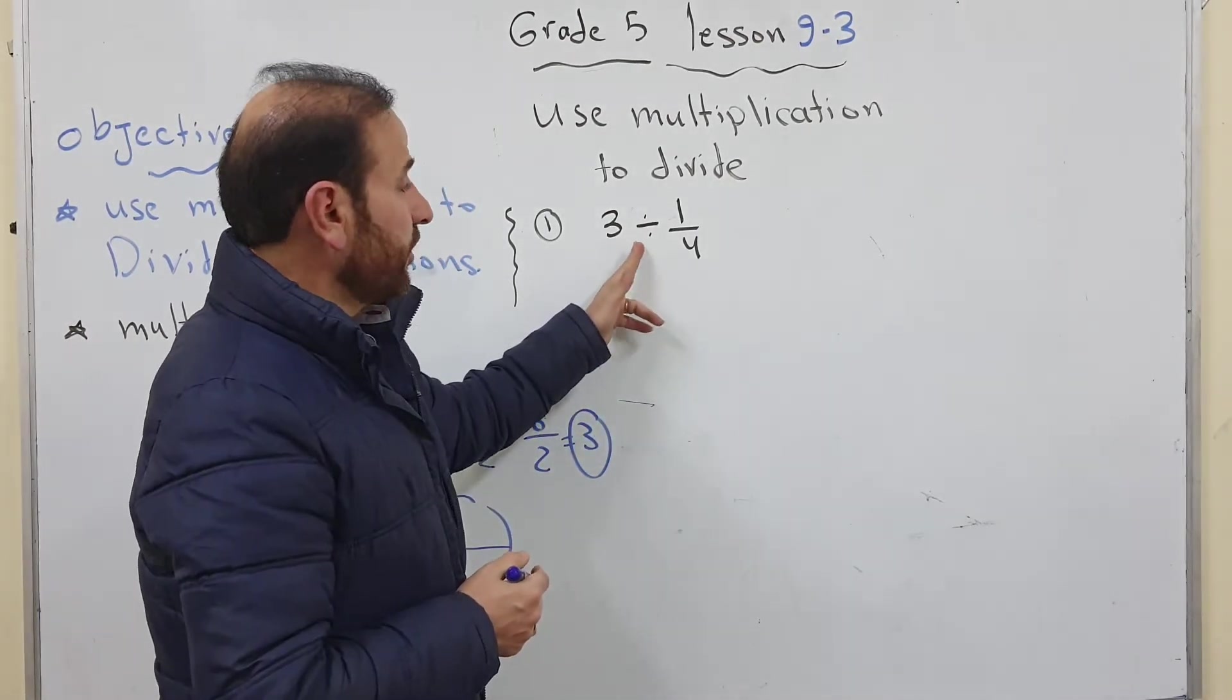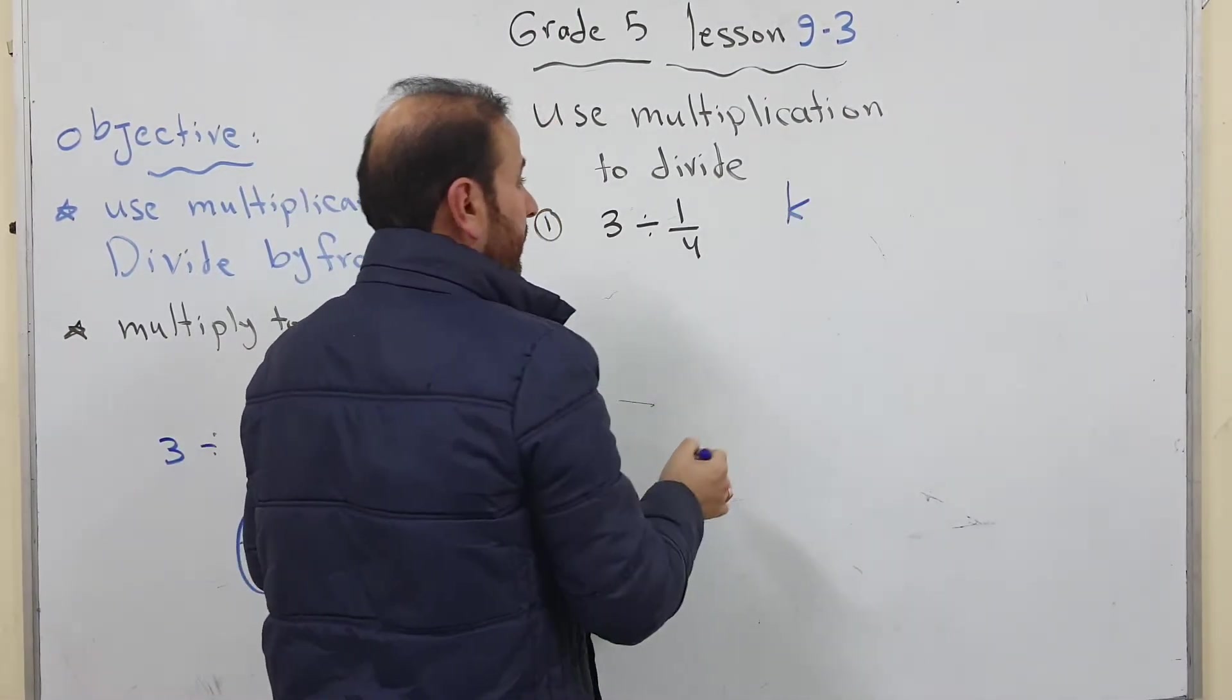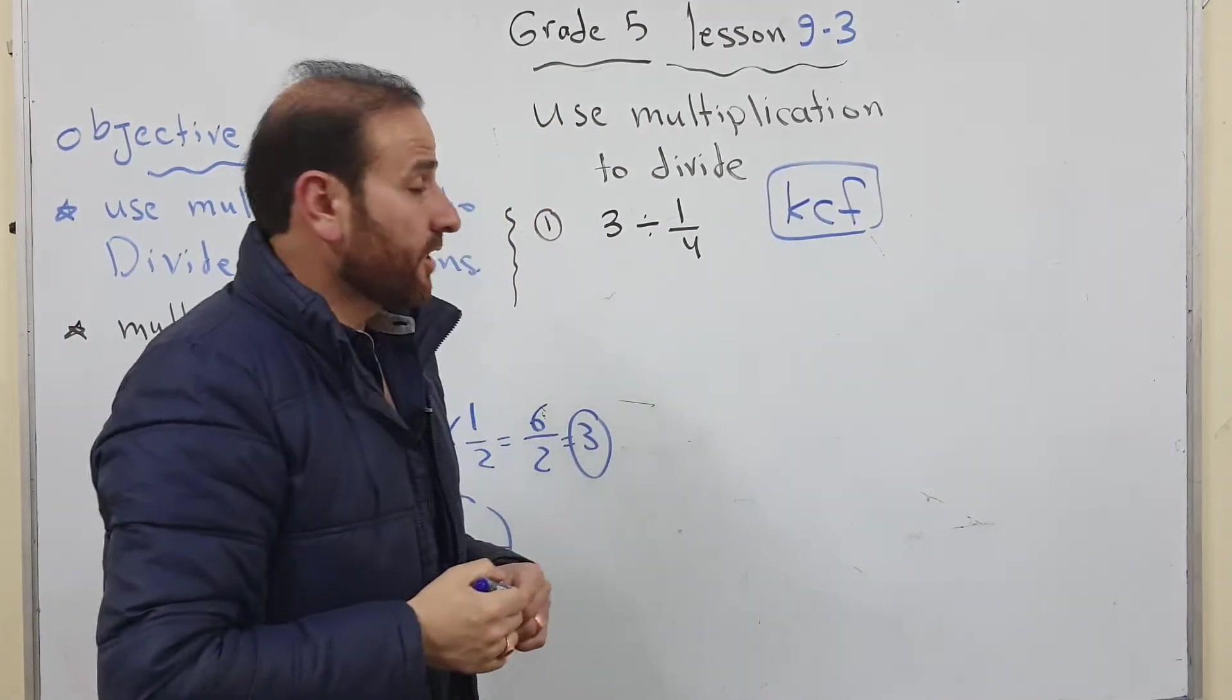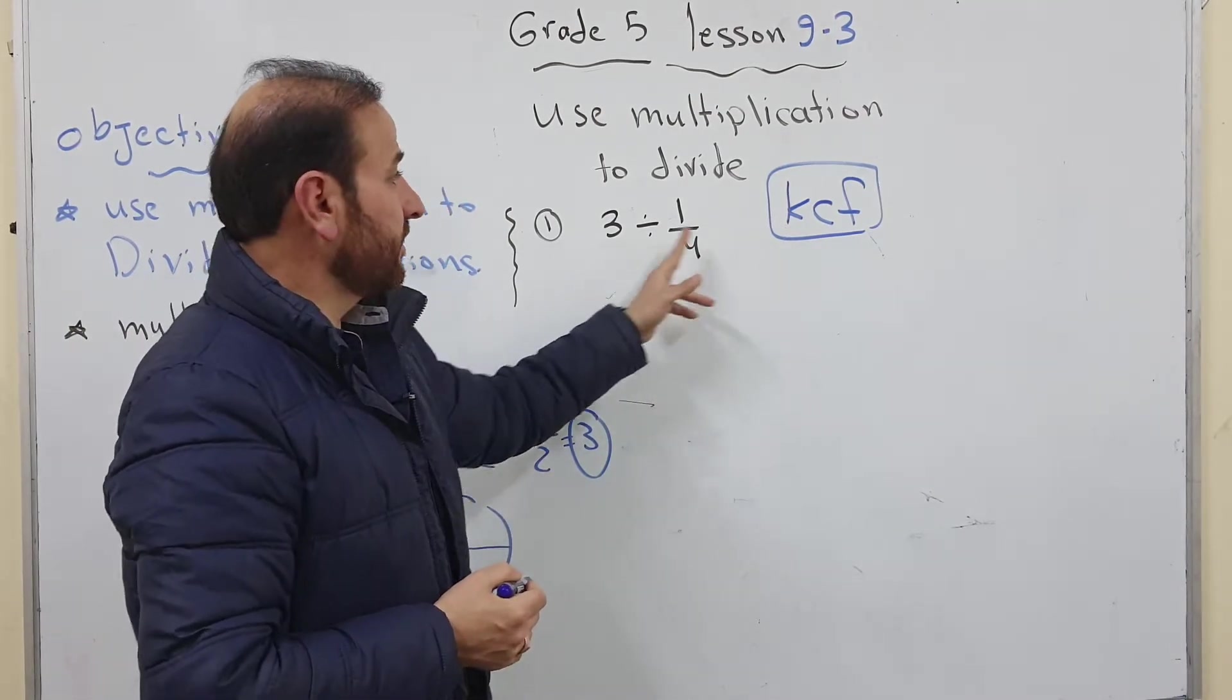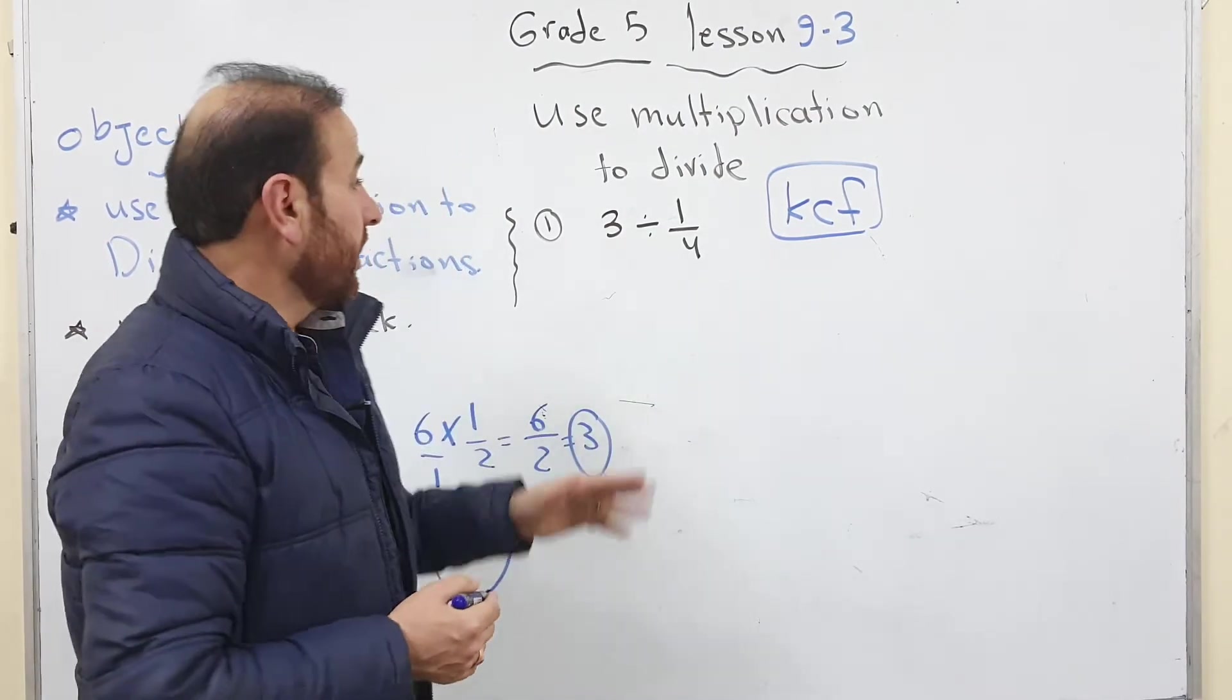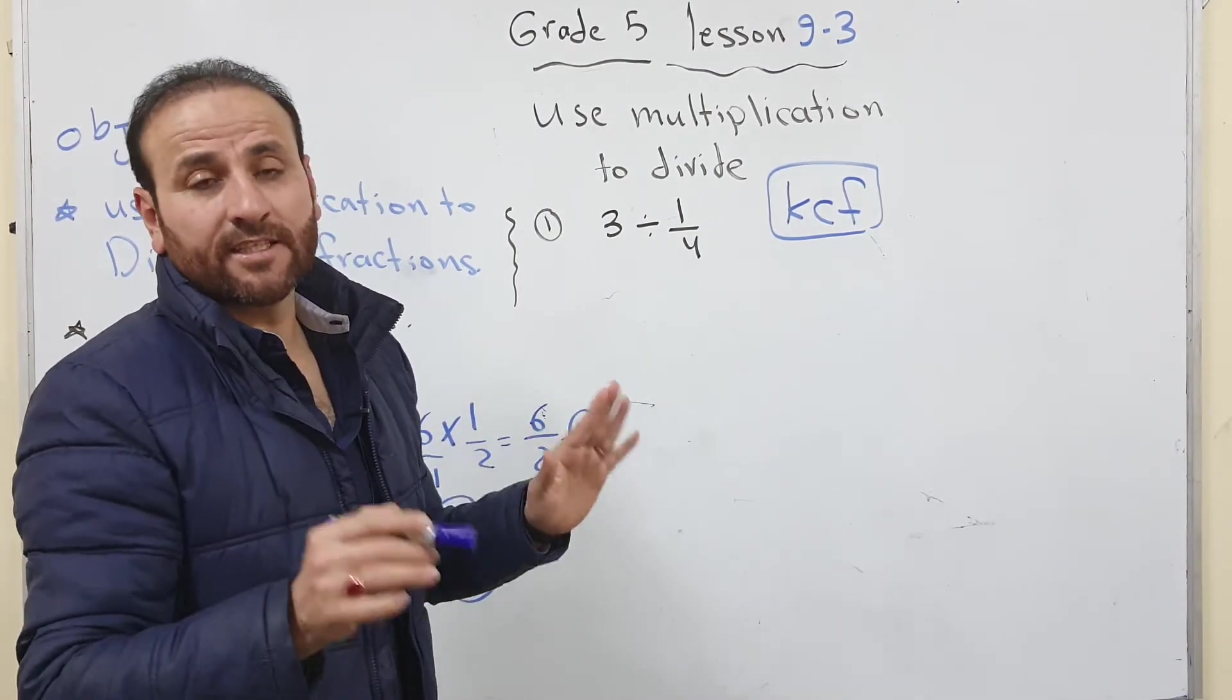Keep me, change me and flip me. We can write it as KCF. Not KFC. Keep me, so I keep the first number as it is. Now the second one change me and flip me. What I mean by keeping, you can keep 3 as it is or write it as 3 over 1.